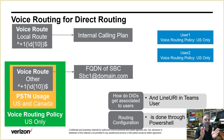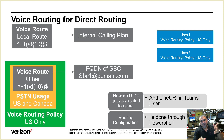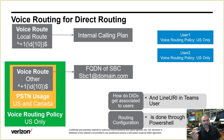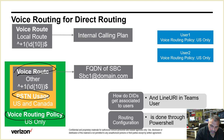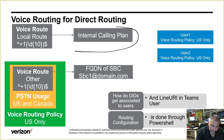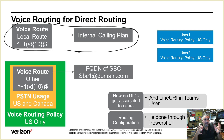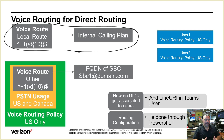For Cisco guys: throw out Calling Search Space and Partitions. Think route lists, route groups, and trunks — that's the same concept here. And inside your tenant there's always a voice route called 'Local Route,' which means you don't need to do any local routing — it first checks if dialed numbers match users in your tenant.